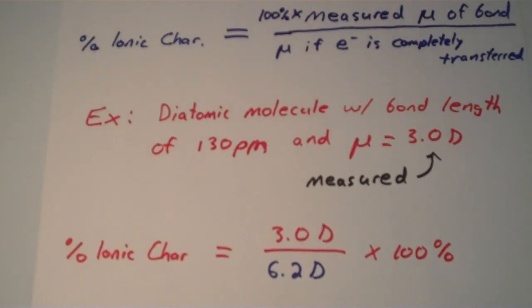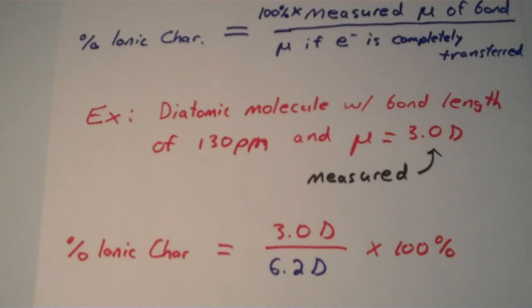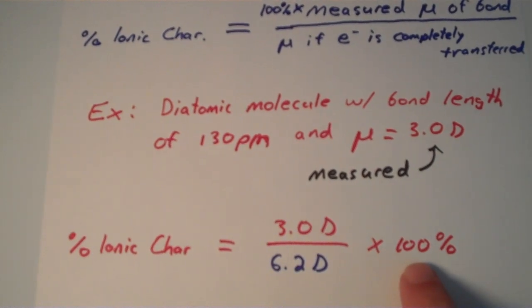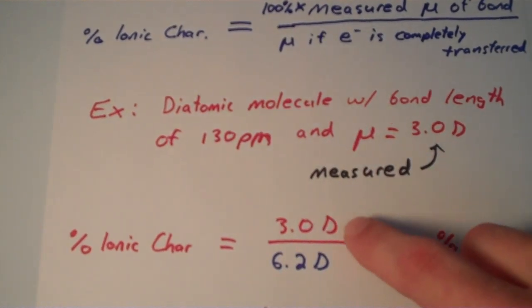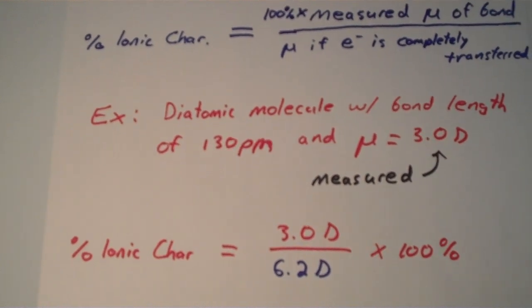All you have to do is plug in those values, and don't forget to tack on your times 100%. Of course, Debye is going to cancel out with Debye, which will give you nothing but a percent.